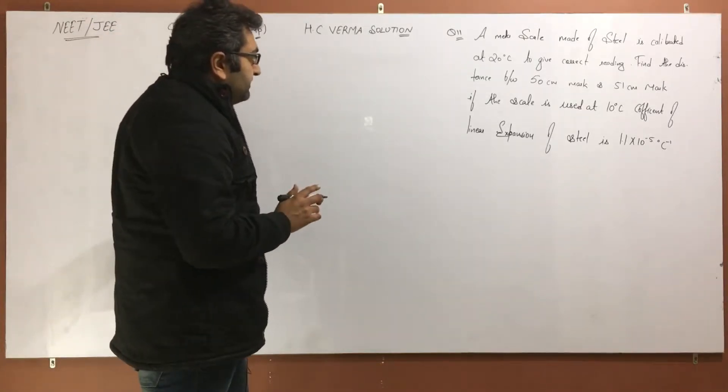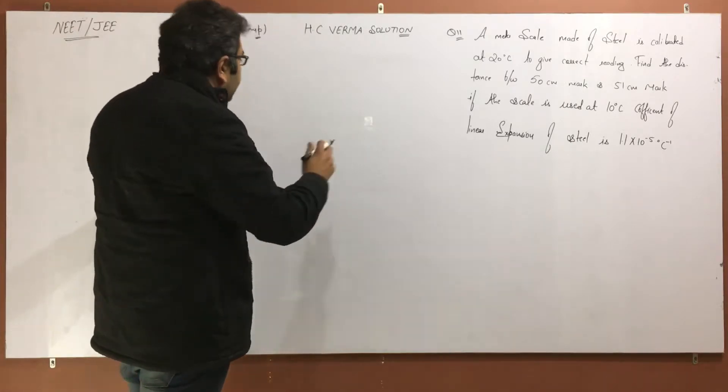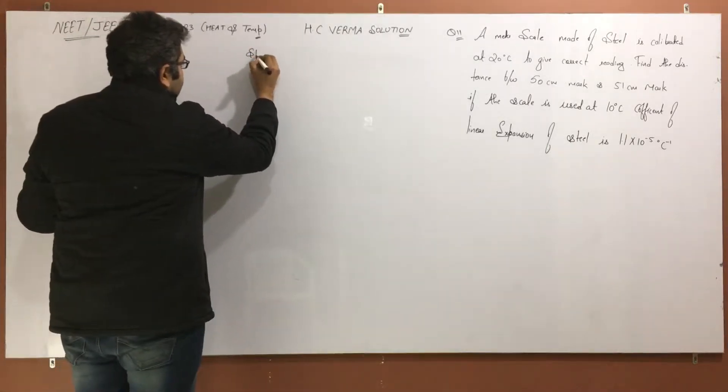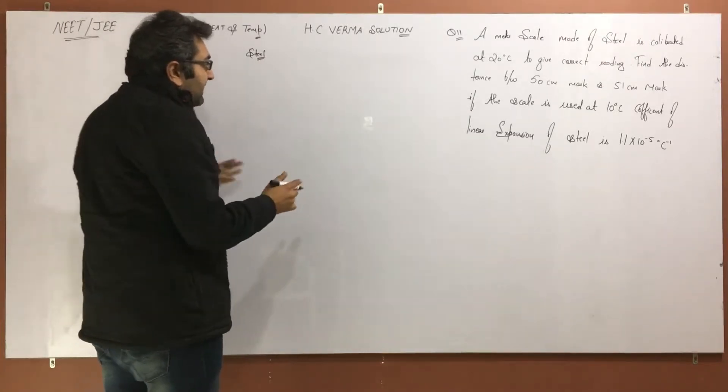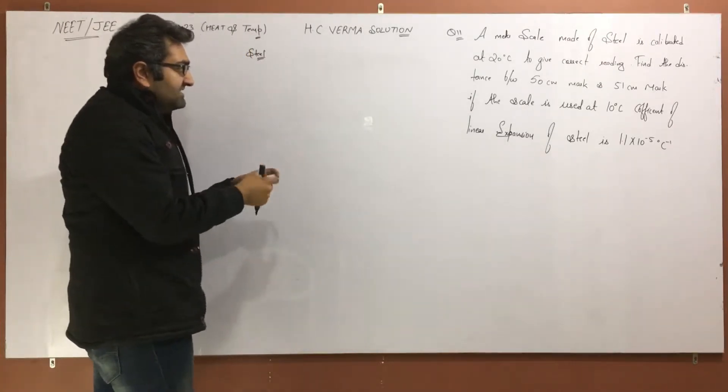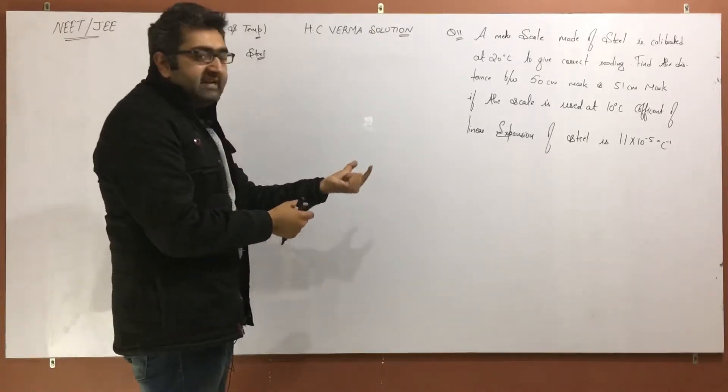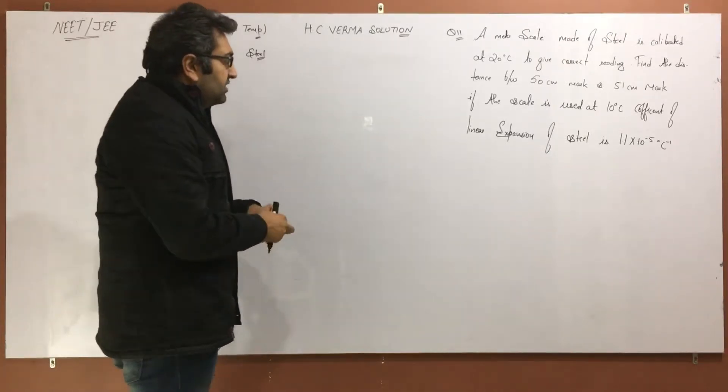In the question, given that we have a scale, it means a steel scale. Then what happens? Calibrate. Calibrate means that you decide the actual value of the scale, that is how much the gap is, 1 centimeter, 1 inch, whatever.